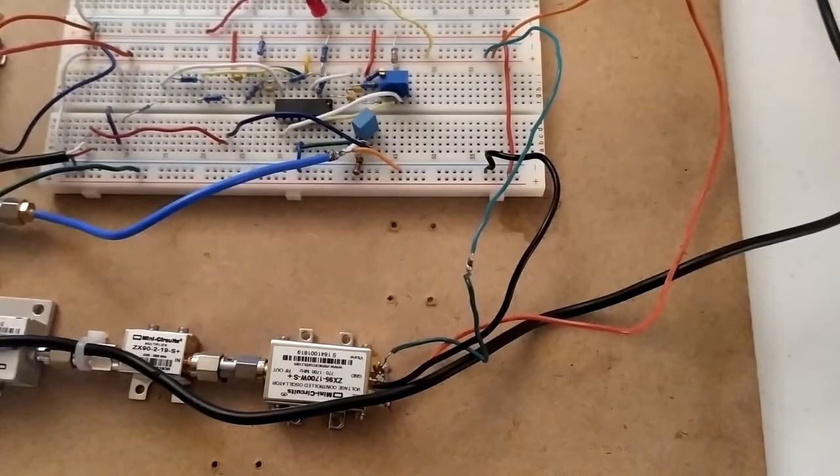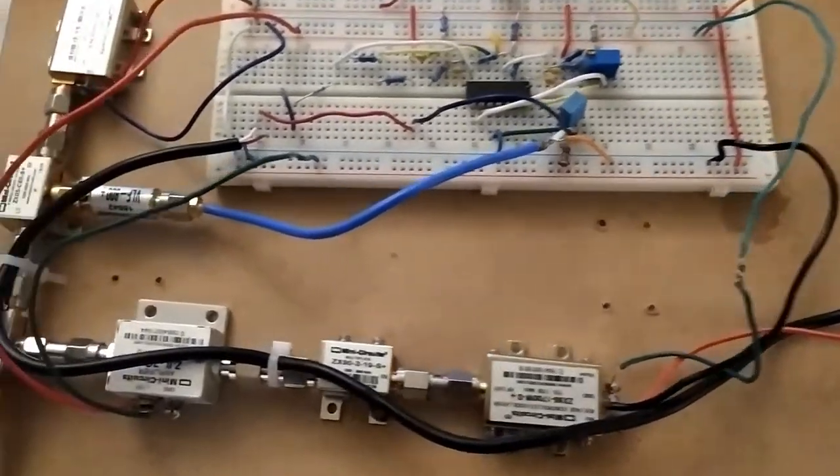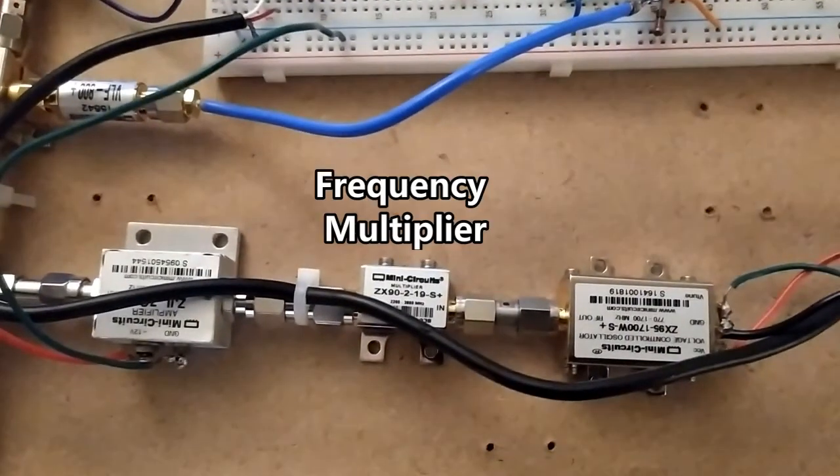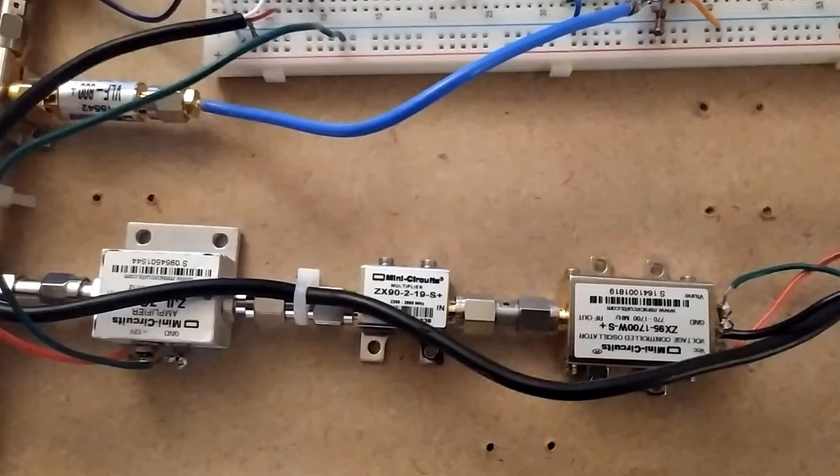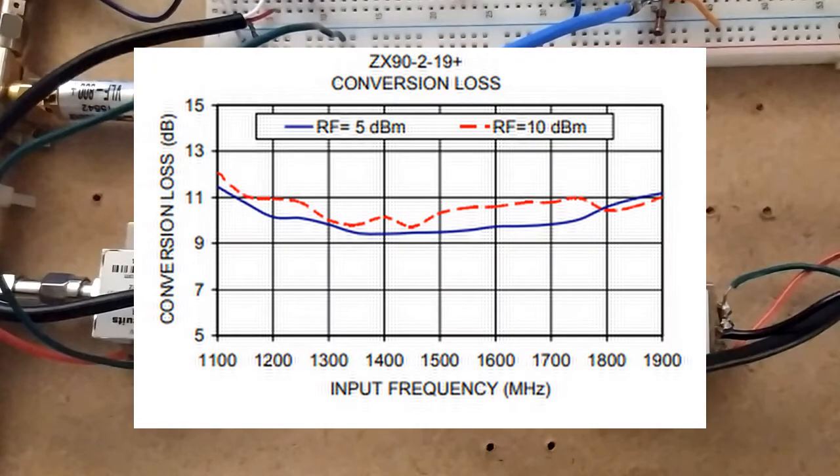And one of the reasons why this is not okay is because of the next RF component, the frequency multiplier. This device takes that output frequency from the oscillator and multiplies it by 2. If we take a look at the performance sheet, we see that the input frequency has a range of 1100MHz to 1900MHz. If we try to use a device outside of its performance range, then there's a good chance that it just won't work.